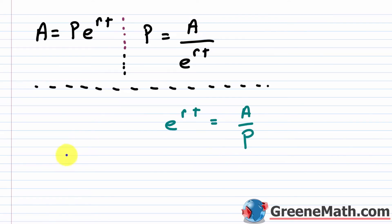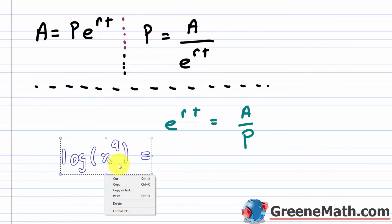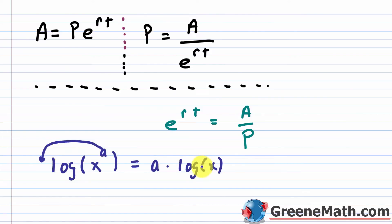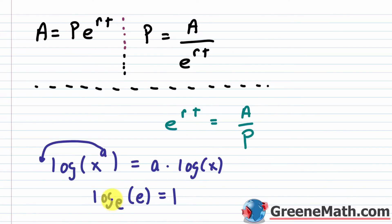Here you need to know a couple of properties. First, log of x to the power of a equals a times log of x — the exponent can come out in front. Second, log base e of e equals one, because e to the power of one gives you e. When we have log base e, we call that the natural logarithm, abbreviated ln. So ln of e equals one.